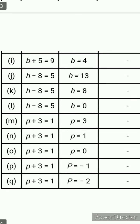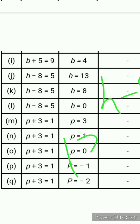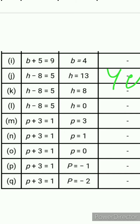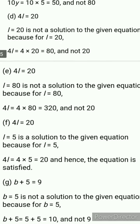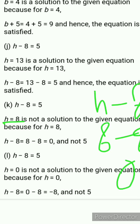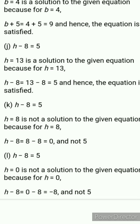Next one is h minus 8 equals 5 where h equals 13. Put 13 in place of h: 13 minus 8 equals 5. So the equation is satisfied, and h equals 13 is the solution. For the next case, h equals 8: 8 minus 8 equals 0, not 5. So the equation is not satisfied for h equals 8.